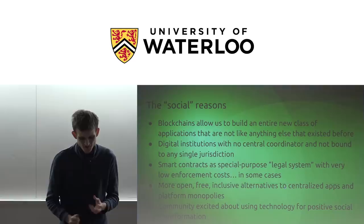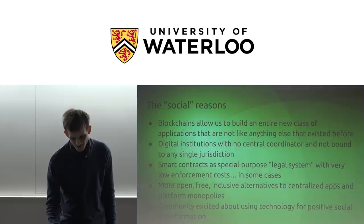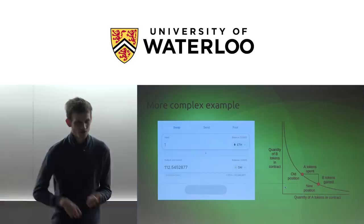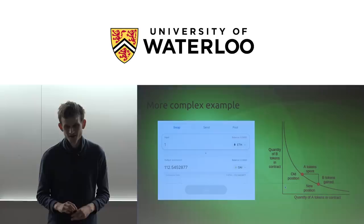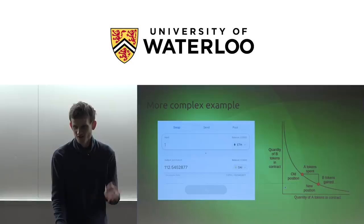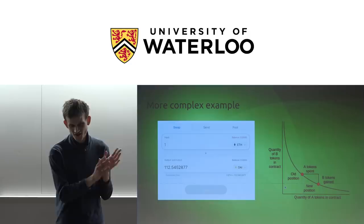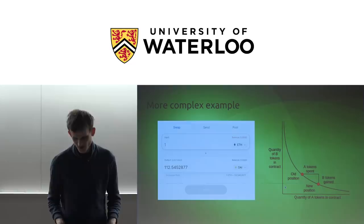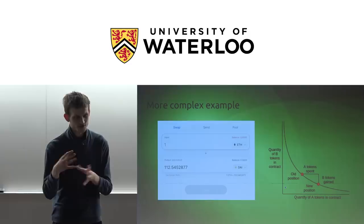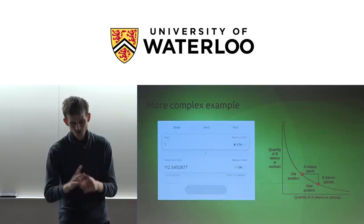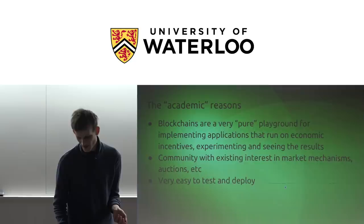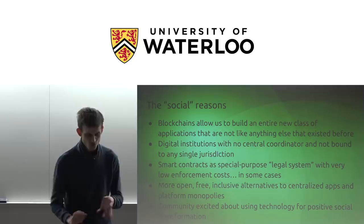Blockchains also let us build an entire class of applications that are not like anything that existed before. Something like Uniswap is just not something you can build on top of BitTorrent, off-the-record messaging, or Secure Scuttlebutt — it requires globally shared state. Globally shared state is a strictly more powerful primitive, but you do pay for it: it's more expensive, you have to achieve global consensus, and you have higher latency. But there is this entire new class of things you can do if you have decentralized globally shared state and digital institutions with no central coordinator not focused in any single jurisdiction.